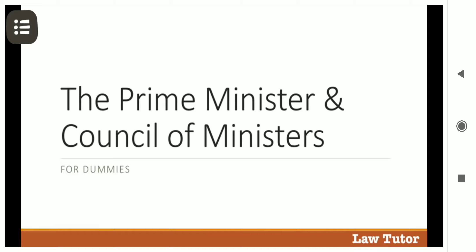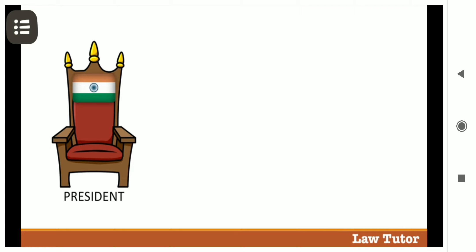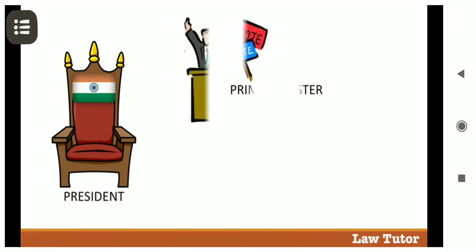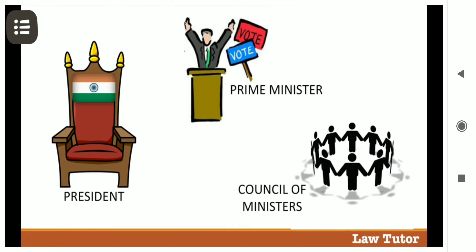This video is about the office of Prime Minister and his Council of Ministers. The President of India is the Constitutional Executive Head. The real head of the government is the Prime Minister and his Council of Ministers. All decisions are taken in the name of the President, but the President cannot act on his own. According to the Constitution, the President can only act on aid and advice of the Prime Minister and Council of Ministers.